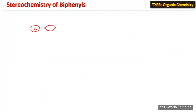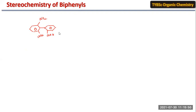Here is a biphenyl system where the substituents are NO2 and COOH. This molecule is named 6-nitrophenyl 2,2'-dicarboxylic acid. When you pass a plane through the first ring, there are two different groups, so this ring does not possess any kind of symmetry.